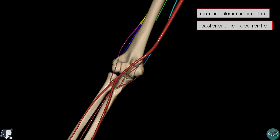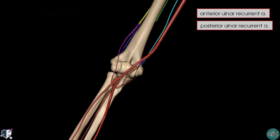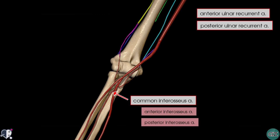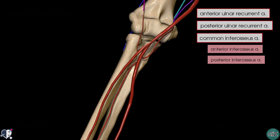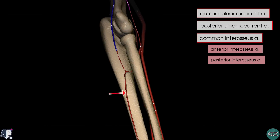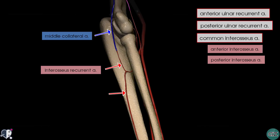A little bit more distally, there's another branch given off the proximal ulnar artery: the common interosseous artery, which divides into an anterior branch and a posterior branch. The anterior interosseous artery descends down the forearm on the anterior aspect of the interosseous membrane. Rotating the model posteriorly, we can see the posterior interosseous artery, which gives off the interosseous recurrent artery, anastomosing with the middle collateral artery — which was a branch of the profunda brachii artery.